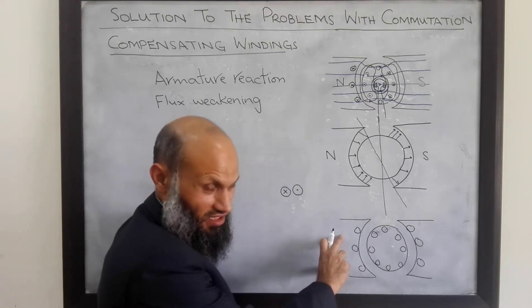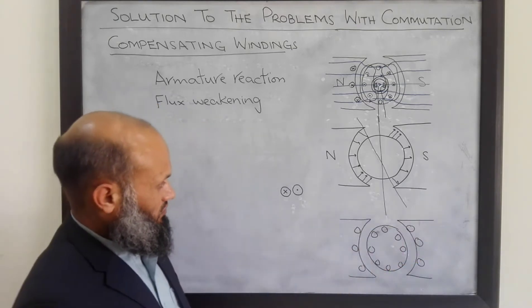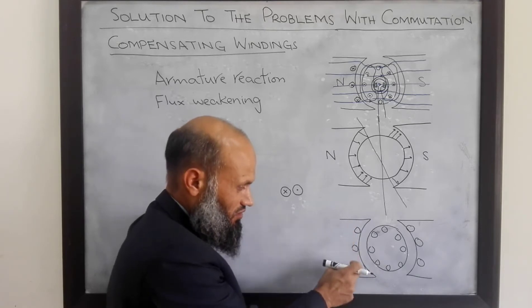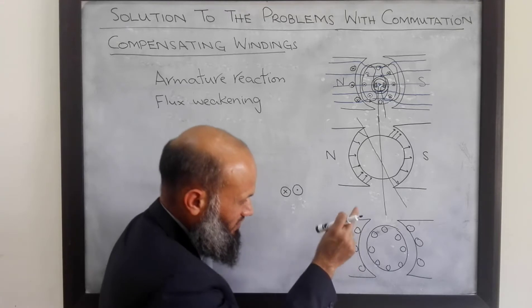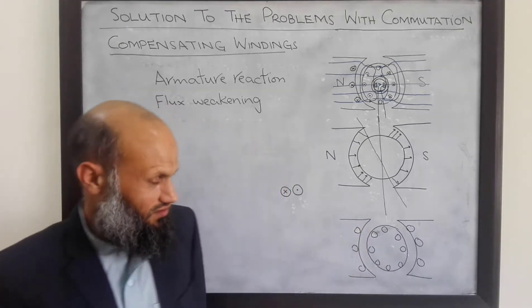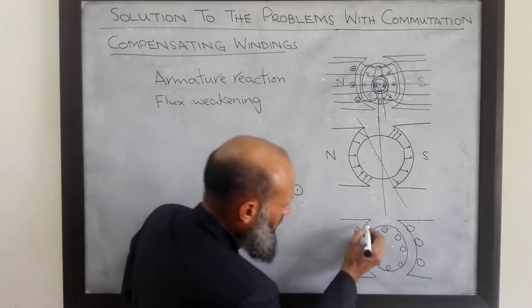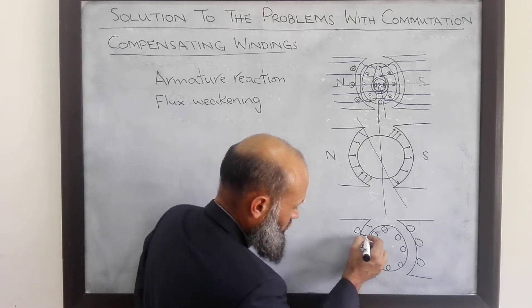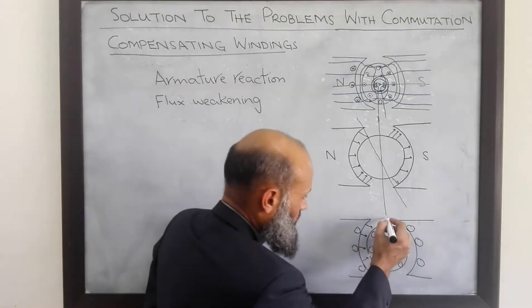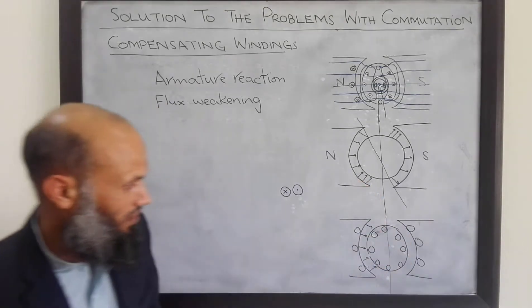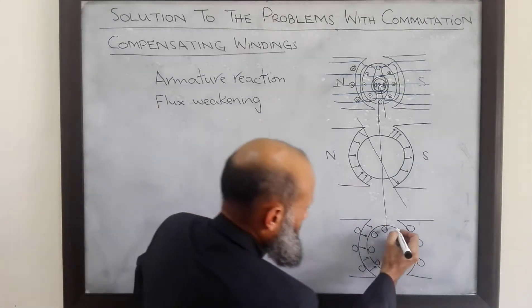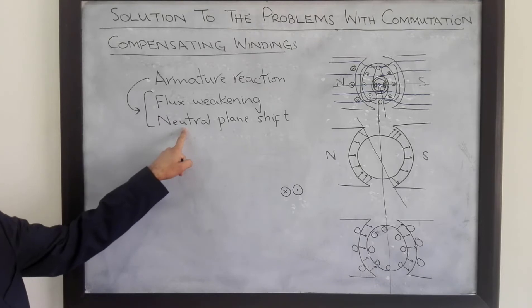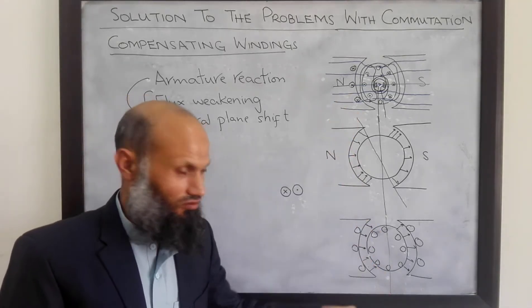There are three magnetic fields: the field due to the main poles, the field due to current in the rotor coils, and the field due to the compensating windings. The MMF due to compensating windings cancels out the MMF due to the rotor windings. We are then left with only one MMF, which is due to the main poles, and hence flux distribution is again uniform along the surface of the rotor. We again get the neutral plane at its original ideal location. Compensating windings resolve both problems of armature reaction: flux weakening and neutral plane shift.